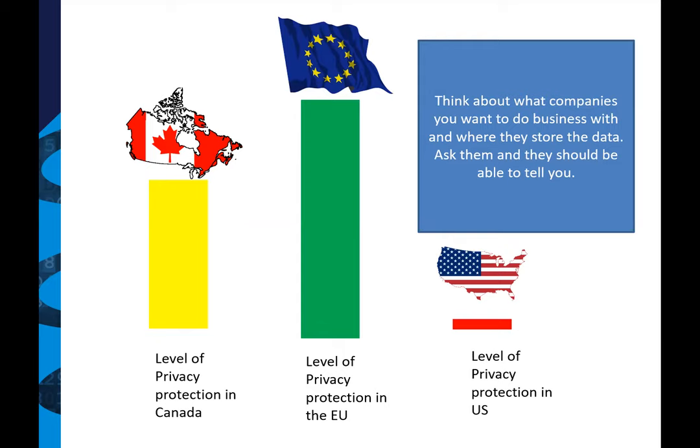Most companies are in jurisdictions around the world that have good privacy laws, but a few aren't. The EU has the strongest privacy protection in the world. I have a personal email account out of Germany and I feel really comfortable with that because I know the servers are located in Germany and subject to really strong privacy protections. The United States does not have a very strong level of privacy. We don't prohibit people from using Gmail or Hotmail, but if you've got a couple of options and one's in the EU, the EU does have the stronger privacy laws currently.